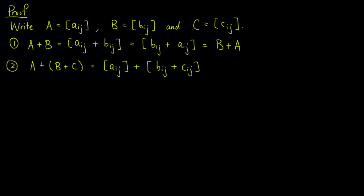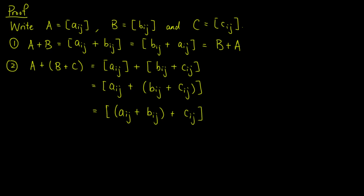For the second property, A plus (B plus C) equals the matrix with entries Aij plus the matrix with entries Bij plus Cij. By the definition of matrix addition, we have the matrix with entries Aij plus (Bij plus Cij). Since the order of addition in the real numbers does not matter, this is equal to the matrix with entries (Aij plus Bij) plus Cij. By the definition of matrix addition, we can break this into two matrices, giving us (A plus B) plus C.